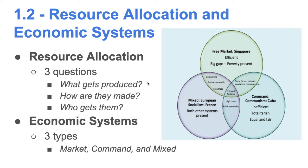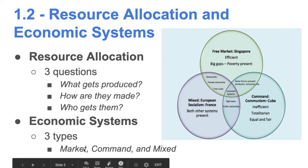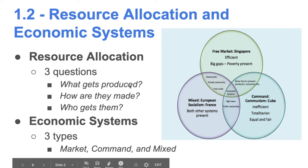The way a particular government or group decides to allocate resources essentially defines their economic system. However they decide what gets made, who gets to consume it — that determines whether they are a market system, a command system, or somewhere in between, what we call mixed. The essential questions are: what goods and services are produced, how are they made, who gets to consume them, and how much do they have to pay?